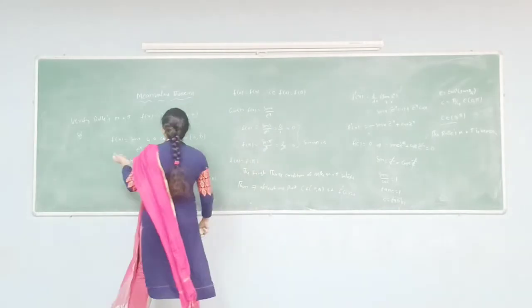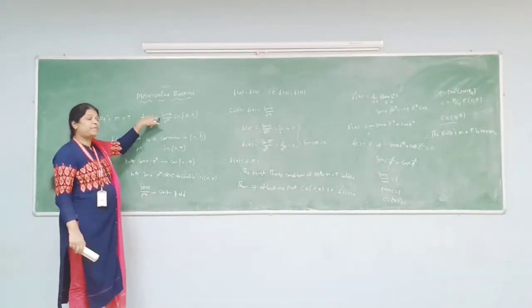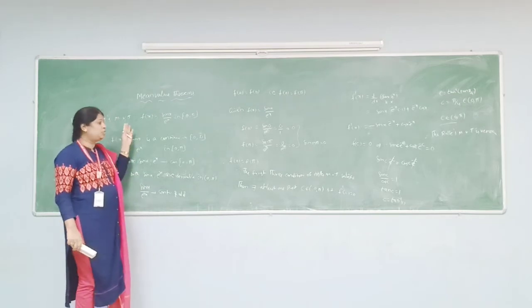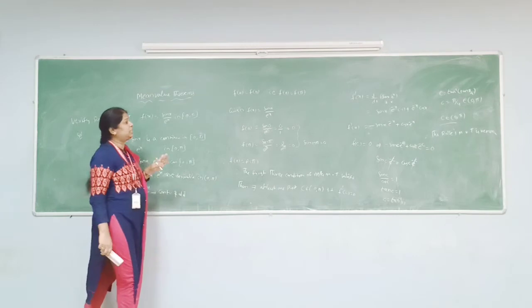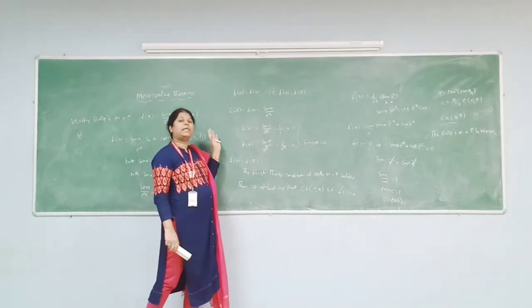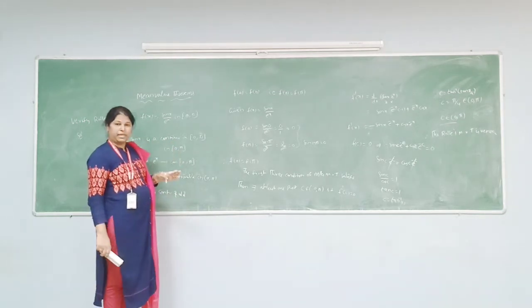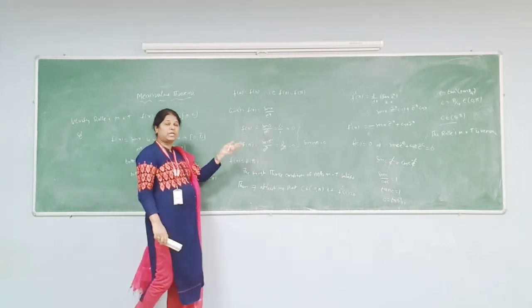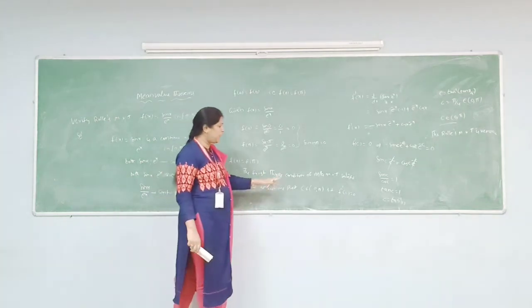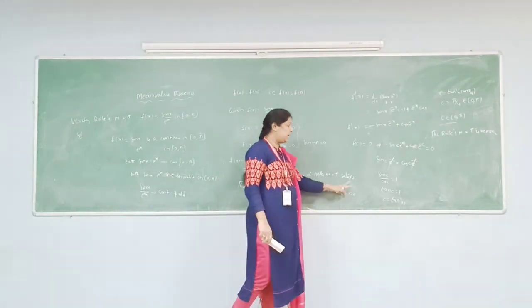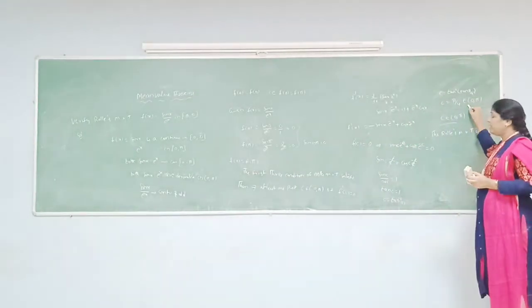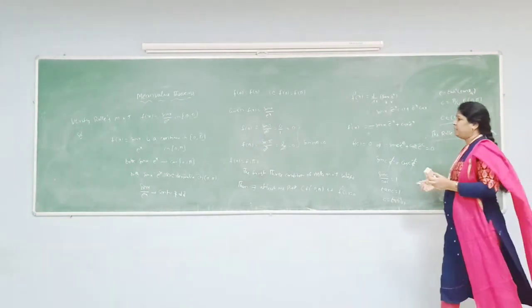To summarize: for f(x) = sin(x)/e^x, both sin(x) and e^x are continuous and differentiable in [0, π]. The first two conditions of Rolle's theorem are satisfied. f(0) = f(π) = 0, so the third condition is also satisfied. There exists at least one point c in (0, π) such that f'(c) = 0, and we found c = π/4, which belongs to (0, π). Therefore Rolle's mean value theorem is verified.